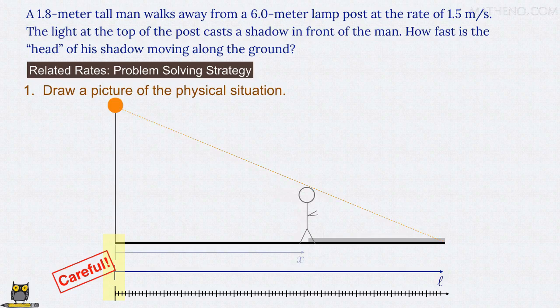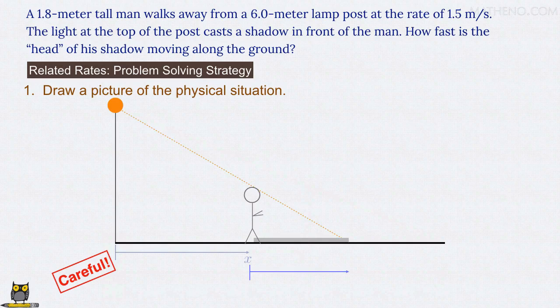By contrast, a common error is to draw your figure like this, and without really thinking about it, measure the position of the head of the shadow from where the man is standing. That seems reasonable, but what you don't realize is that with this choice, you've attached the coordinate system to the man's feet.